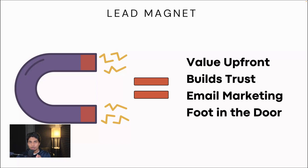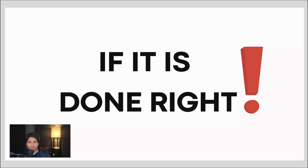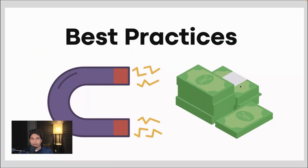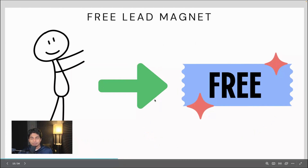What a lead magnet actually does, if you do it the right way — because I'm going to go into some examples where it's very bad — is it provides value upfront, it builds trust with your audience, and you could do email marketing and SMS marketing down the road because you collected those contacts. A bad lead magnet is harmful to your business because people will just think you want their email to market them and you don't care about them. So provide value in your lead magnets. A bad lead magnet would be bad information or a lack of effort, no value. They lose trust in you and it's a waste of their time. Don't put bad information under your name or your business's name.